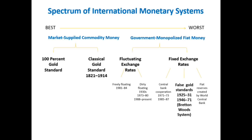This is more of an Austrian-oriented approach to analyzing international monetary systems. All the way on the left, we have market-supplied commodity money. That is a distinguishing characteristic of the gold standard — it's supplied by the market. The supply of money in circulation, the money supply, is determined ultimately by the production of gold in the economy and the amount of gold that exists at any moment.